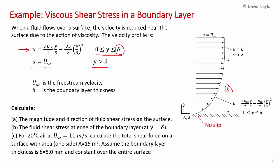The problem asks us to calculate the magnitude and direction of the fluid shear stress on the surface in part a. In part b, we calculate the fluid shear stress at the edge of the boundary layer at y = δ. For part c, with air flowing at a free stream velocity of 11 meters per second, we calculate the total shear force on the surface for a surface area of 15 meters squared, assuming a uniform boundary layer thickness of 5 millimeters.